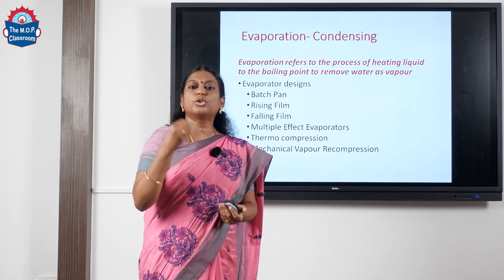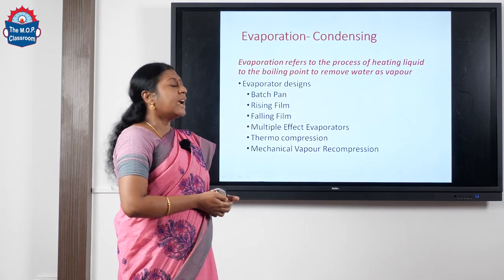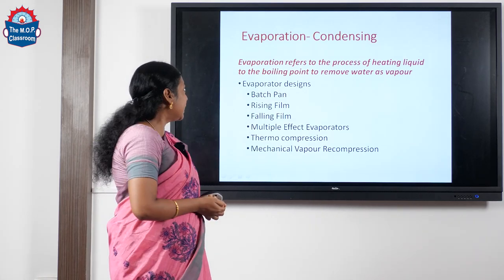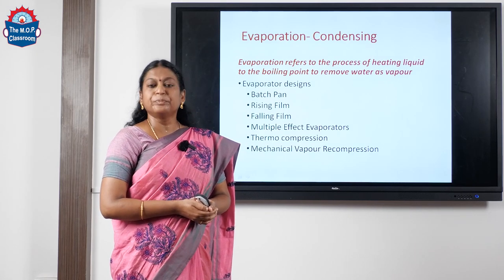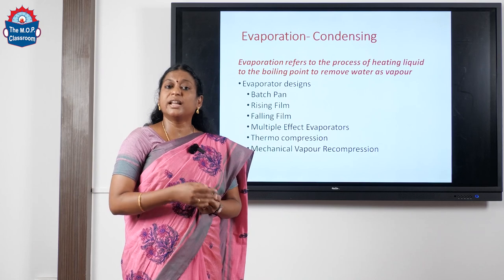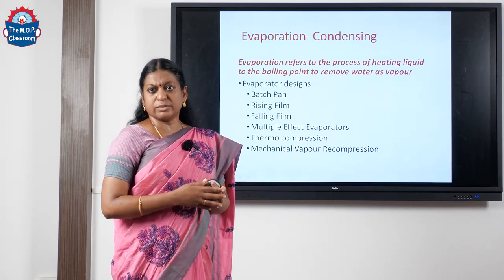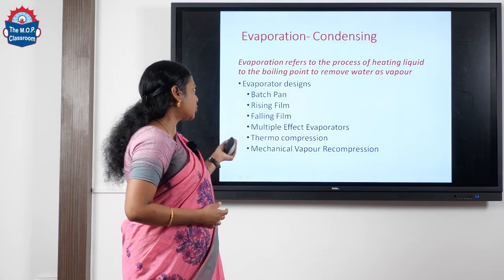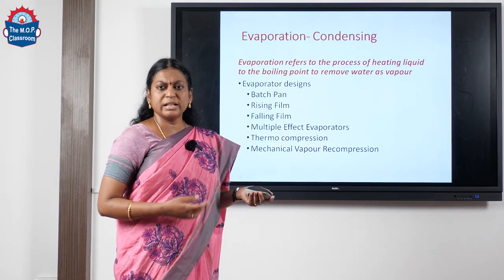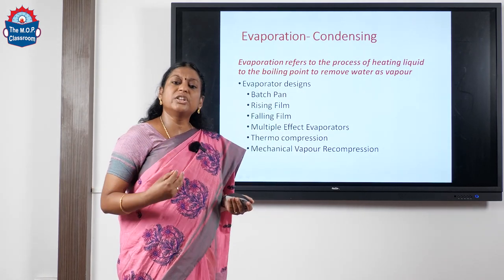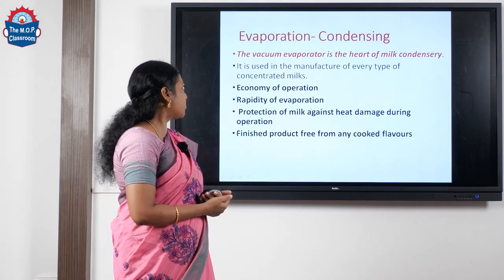Moving on to the heart of our operation — the evaporation or condensing process. Evaporation refers to the process of heating a liquid to the boiling point to remove water as vapor. Various evaporator designs are available: the batch pan, rising film, falling film, and the multiple-effect evaporator — all of which we have studied earlier. We can use any of these evaporator designs to carry out the evaporation process.